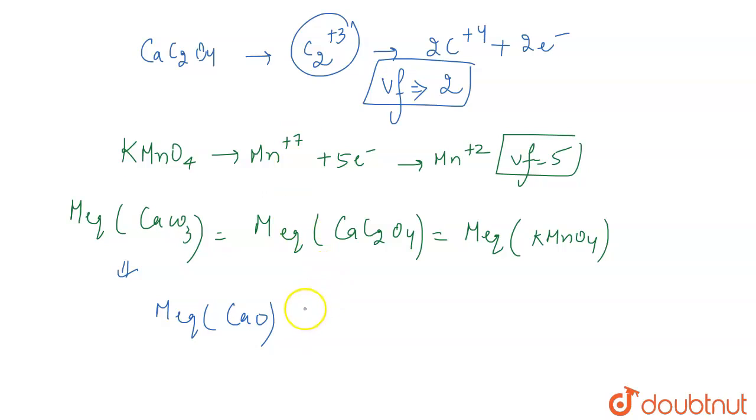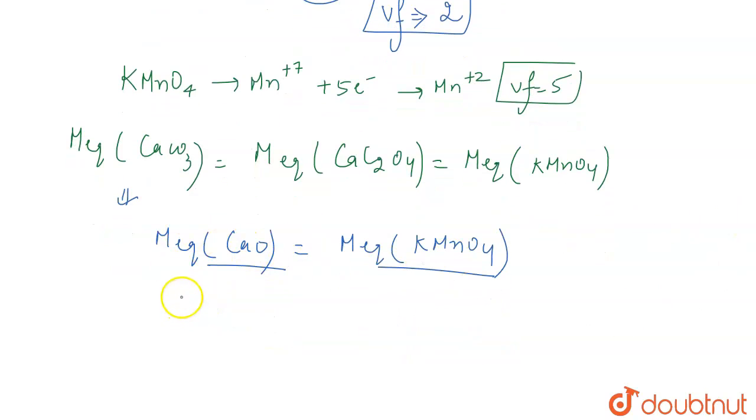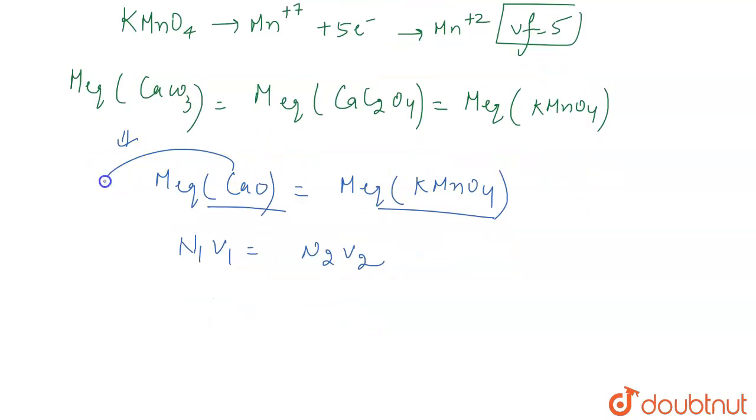This will be N1V1 equals N2V2. How do you calculate the normality of CaO? The molar mass for CaO is 56 grams per mole, and the n-factor is 2 because the oxidation state of the metal tells us the n-factor.